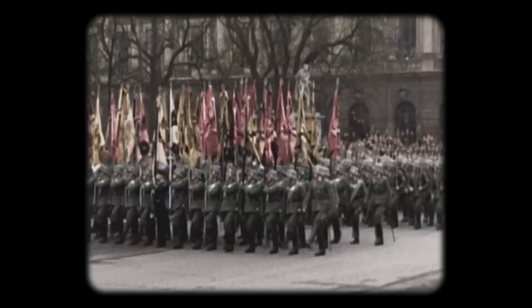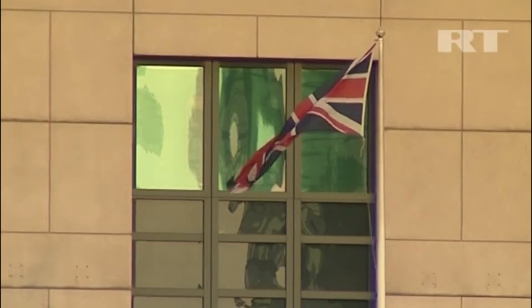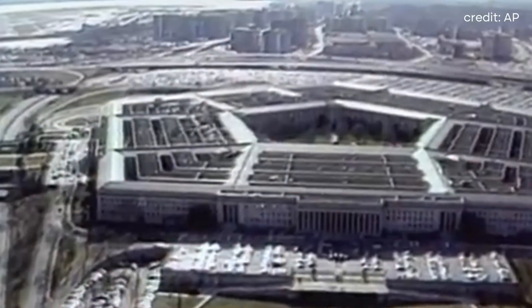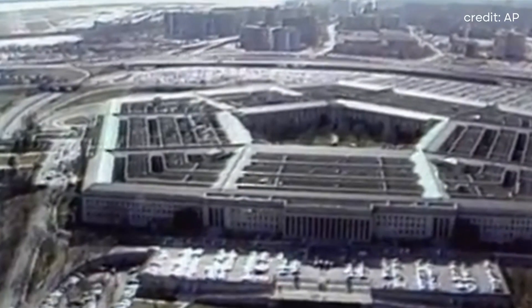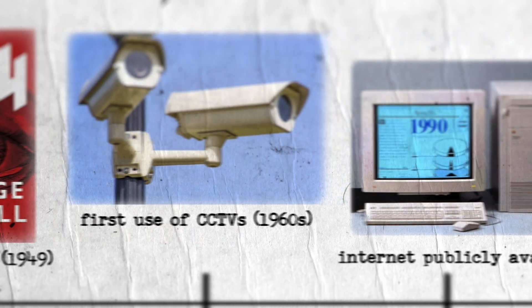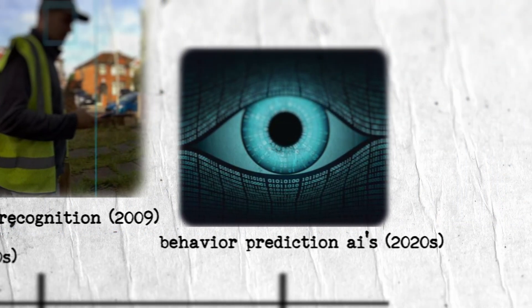Published in 1949 amidst the aftermath of World War II and the onset of the Cold War, 1984 mirrors Orwell's profound concerns regarding governmental overreach, the erosion of individual freedoms, and the potential abuse of technology. The book came out over 75 years ago, but given the current technological advancements, it may be more relevant than it has ever been.